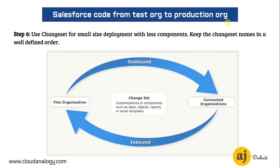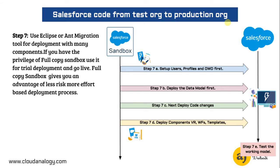We also made sure to use changesets for small-size deployments with fewer components, and to keep the changeset names in a well-defined order. I have seen several developers make the mistake of not naming or adding descriptions to their changesets — that's a bad practice. We should always put a well-defined name including the month detail and the feature being pushed to production.